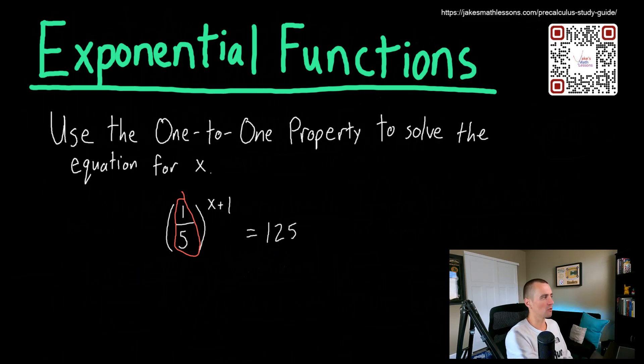So the reason why that indicates that we're probably going to want to go to some different base that's not one-fifth, not 125, but something else that we can get to from that common base is look at the number that we have in the bottom of our fraction here and the number that we have over here.